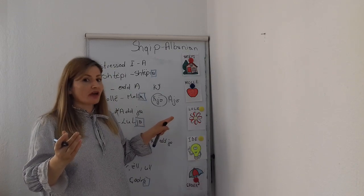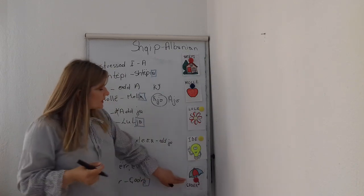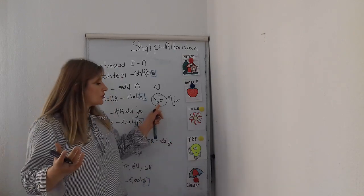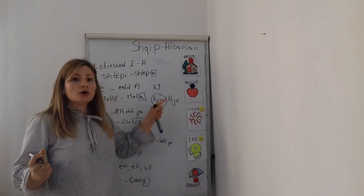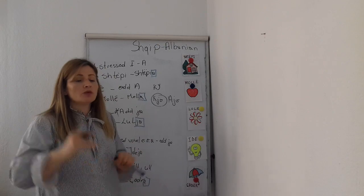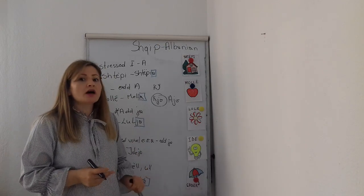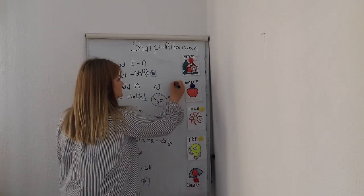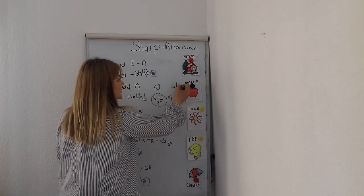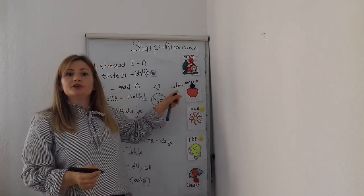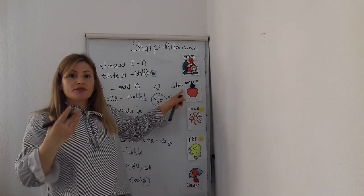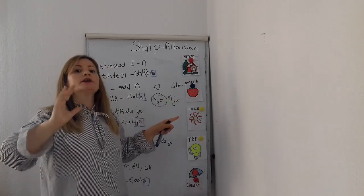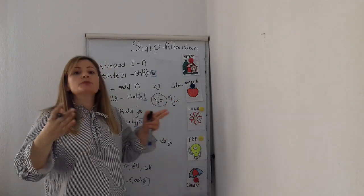For 'Çadër' — 'Kjo është çadër' — this is an umbrella, and 'Ajo është çadër' if it is far. If we had a masculine noun, for example 'libër' — book — which ends in a consonant and is masculine: 'Ky është libër' — this is a book. But if the book is far, 'Ai është libër' — that is a book.